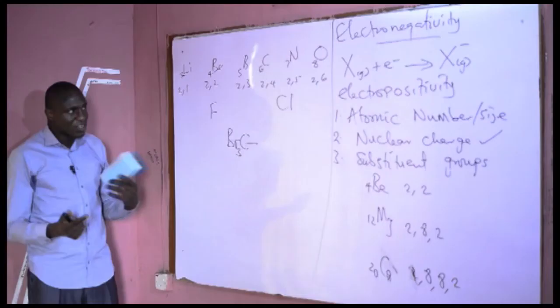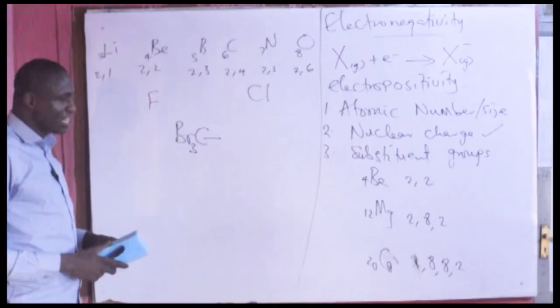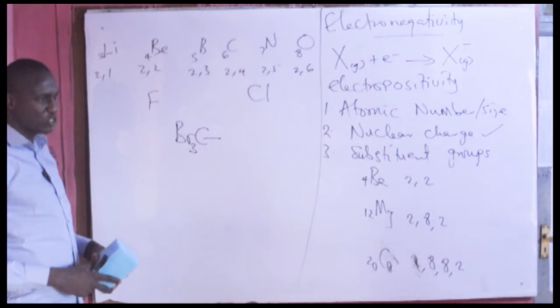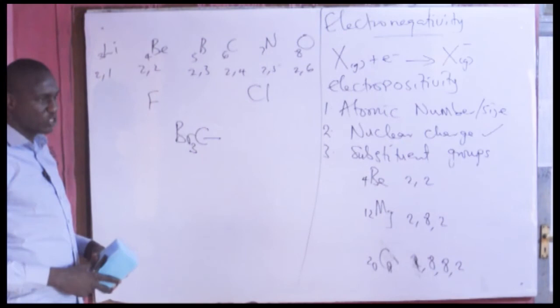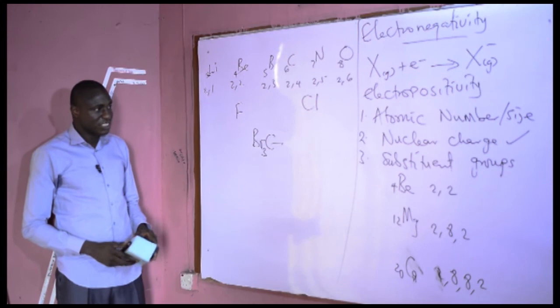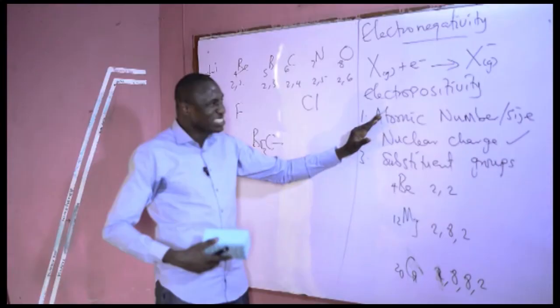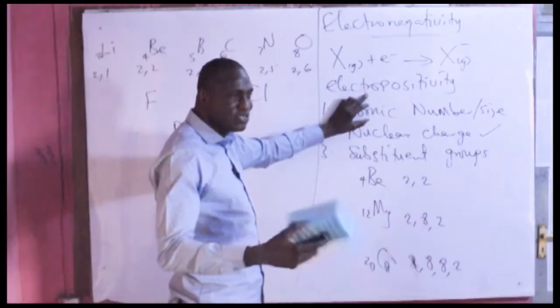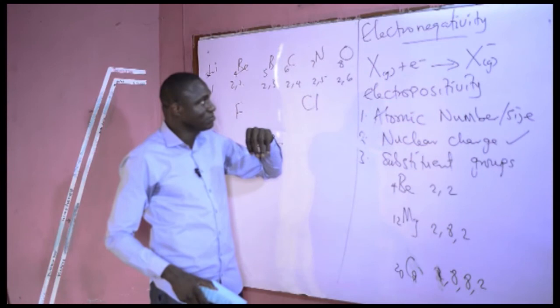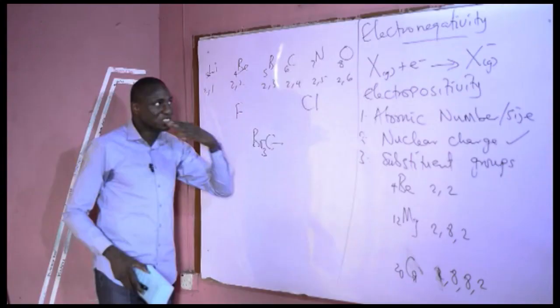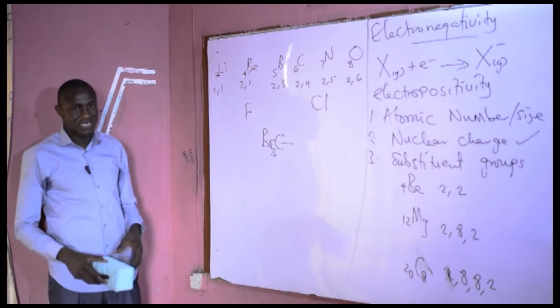In our next episode, we will discuss the various methods of determining or measuring the electronegativity values of elements, and also look at how we can use the electronegativity difference between two atoms to predict the nature of the bond between them — whether it is ionic, polar covalent, or purely covalent. Do not forget that metals are electropositive in nature because they easily release electrons, giving them reducing ability, while non-metals have higher electronegativity and greater oxidizing ability. Thanks for watching, and do not forget to subscribe. Stay safe.